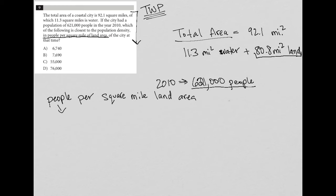Well, how many people do we have in 2010? We have 621,000. Per means divided by, so I'm just going to put my divided by line or fraction line there. Square mile land area - we knew that that is this number here.